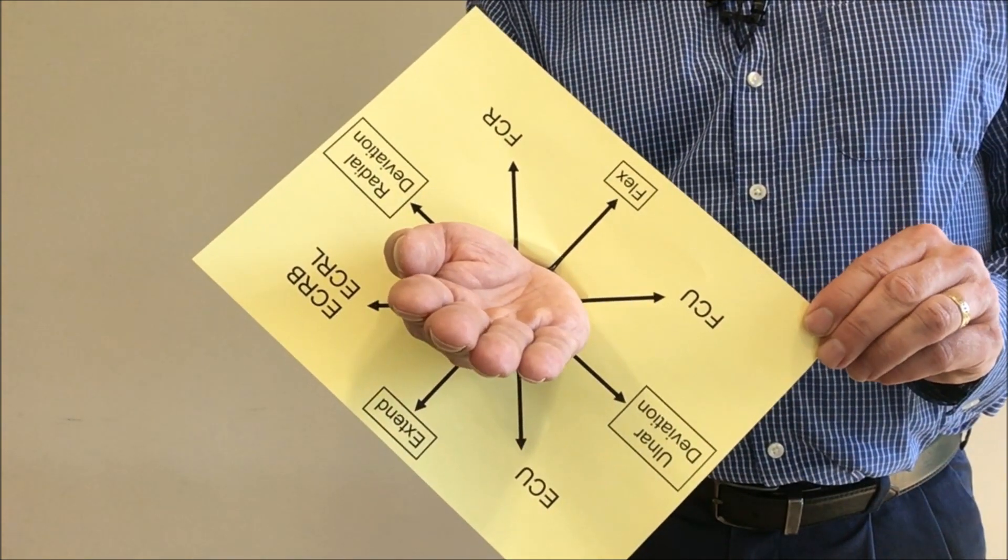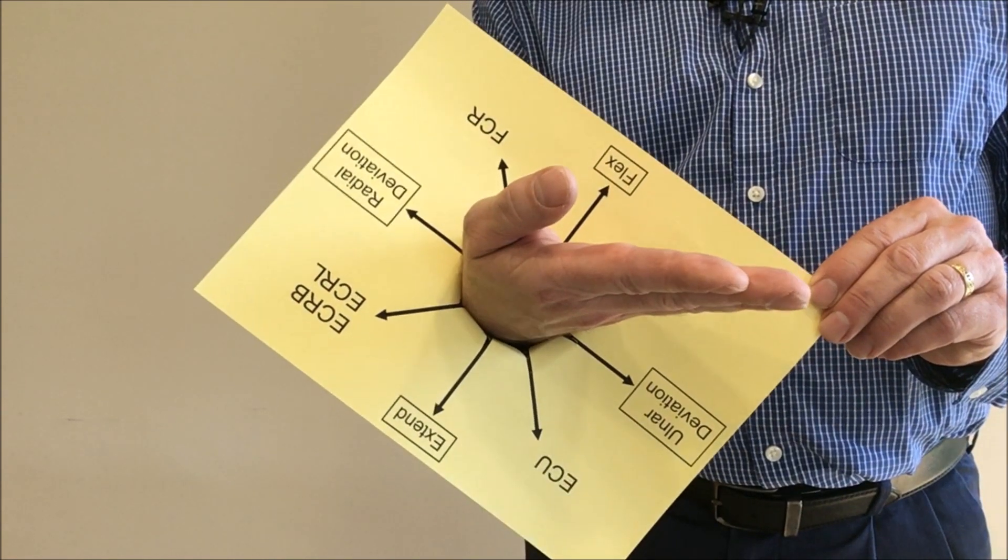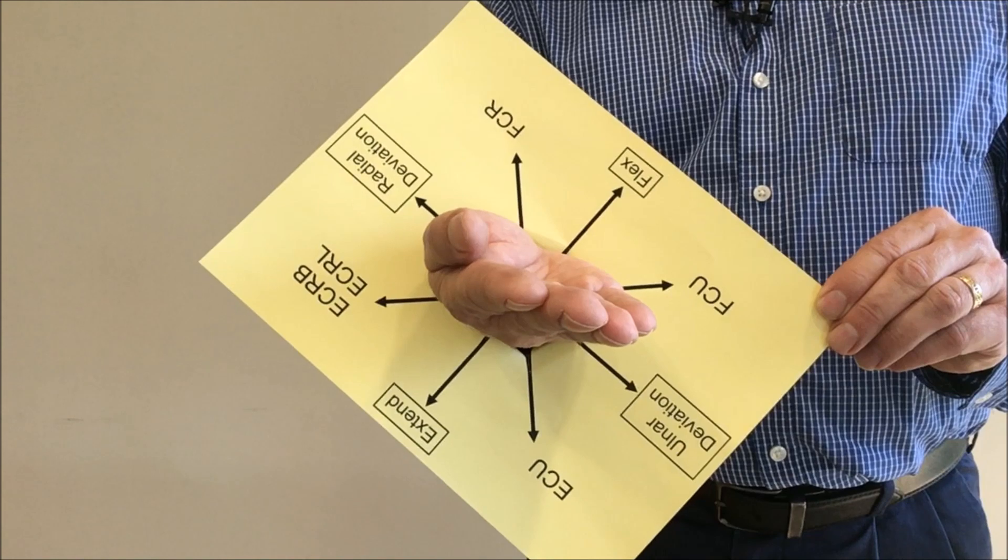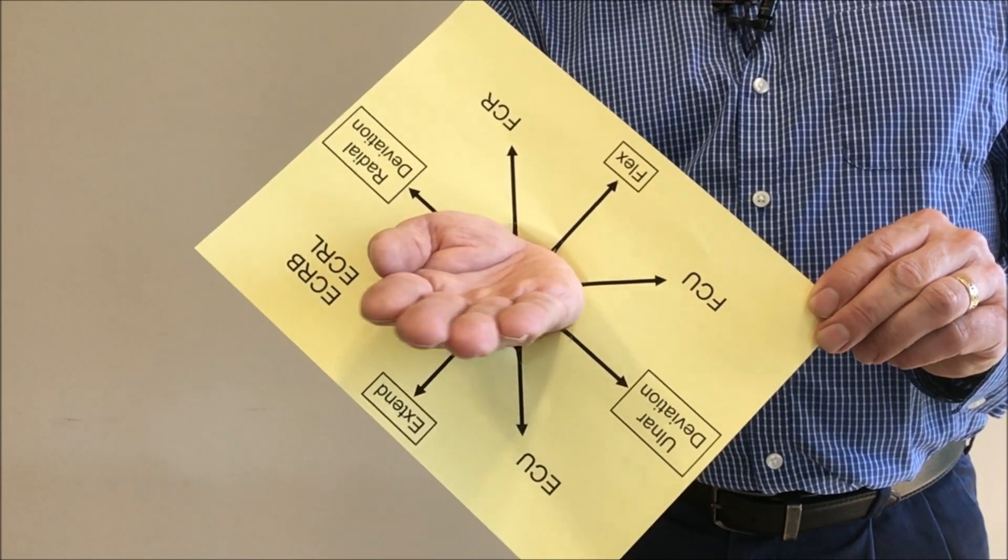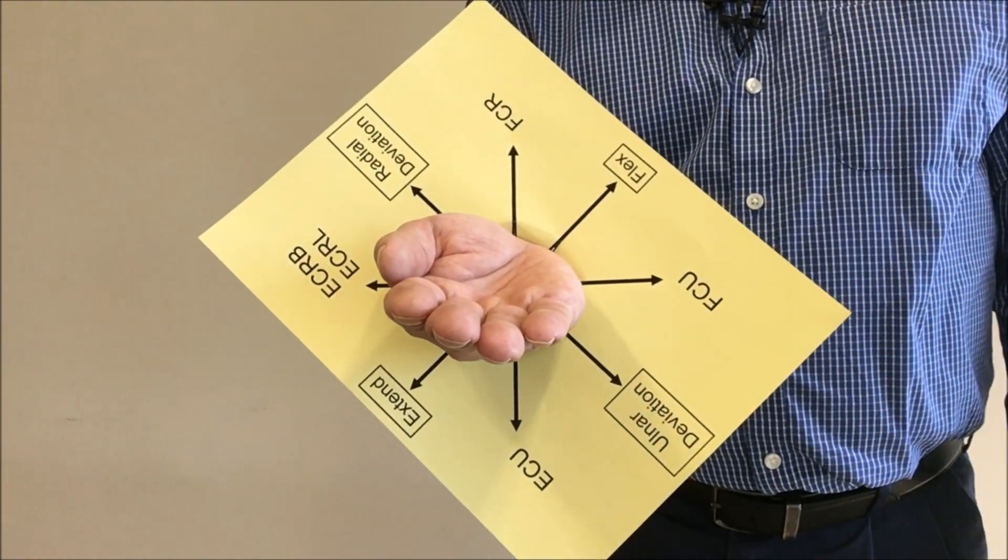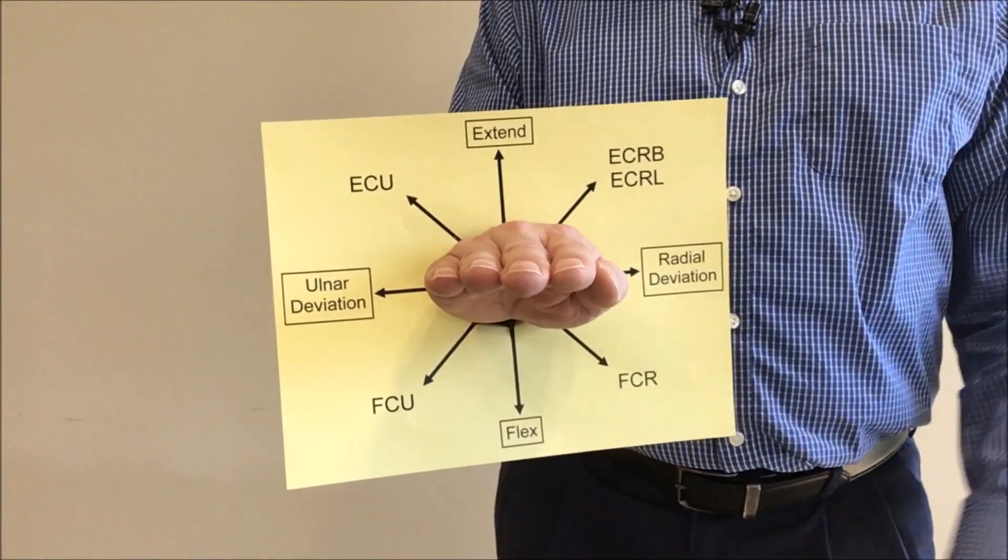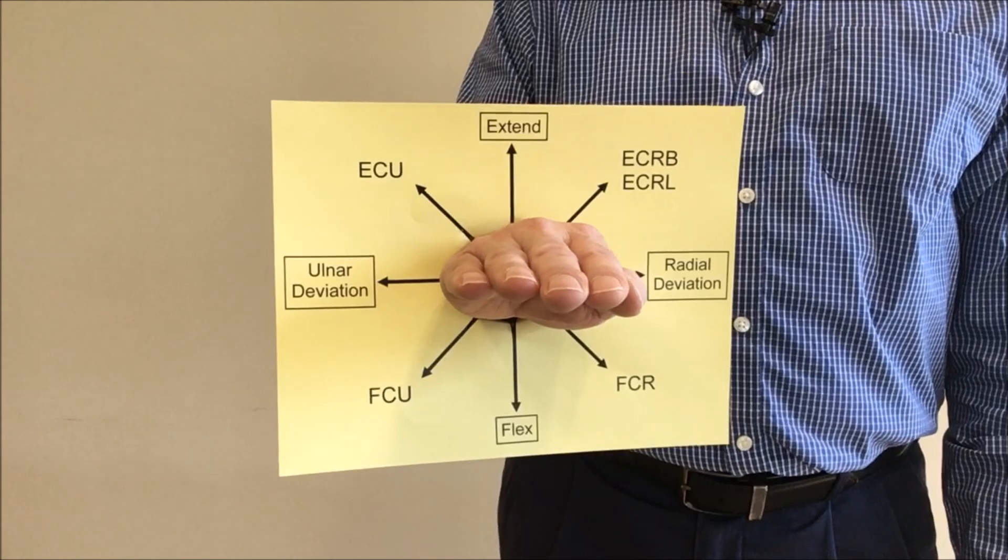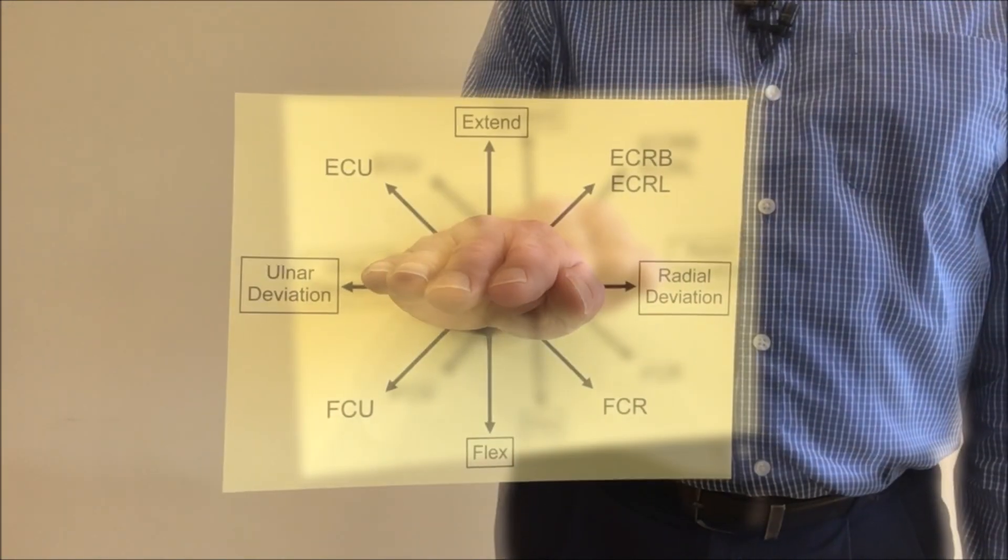Now you can see that the flexor carpi ulnaris is now parallel to the floor and the direction of pull for extensor carpi radialis brevis and longus are now parallel to the floor. So just by rotating the forearm that way, we can make each of those five wrist muscles have their movement be parallel to the floor and thus gravity minimized for manual muscle testing.